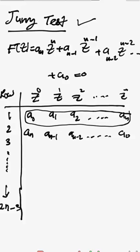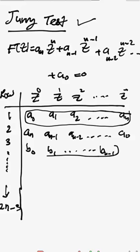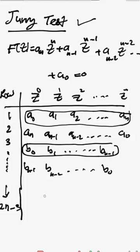The third row contains b0, b1, and continues to bn minus 1. Then the fourth row is the reverse of the third row: you write bn minus 1, bn minus 2, and go until b0. We continue filling rows until we reach the total number of rows, which is 2n minus 3.